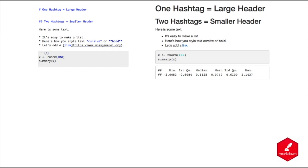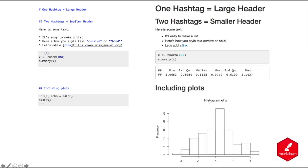A code chunk in R Markdown — for example, code that generates 100 normally distributed random numbers and calls the summary function — is placed in a gray box to be visually distinct from the narrative text. R Markdown runs that code and shows the result right below it, giving you a neatly formatted report showing the code and its output together. You can also include plots; running the hist function on a variable produces a histogram directly in the rendered document.